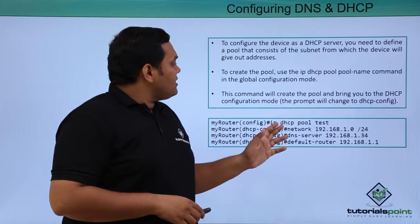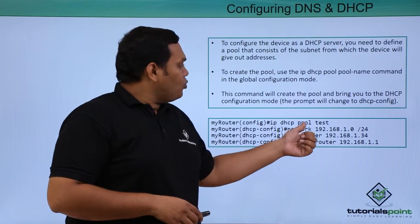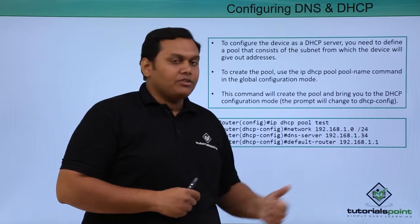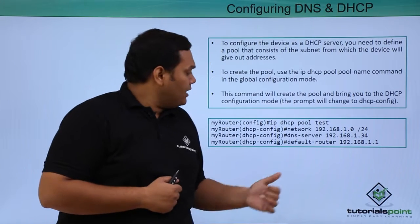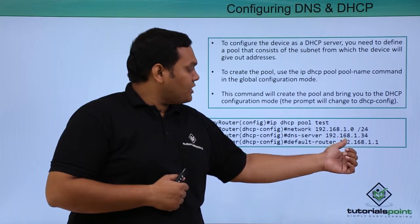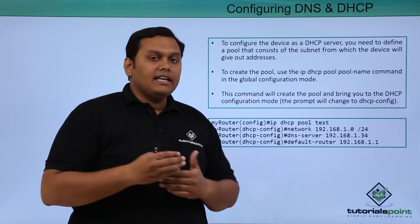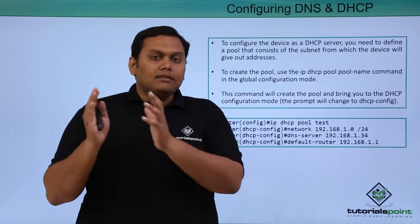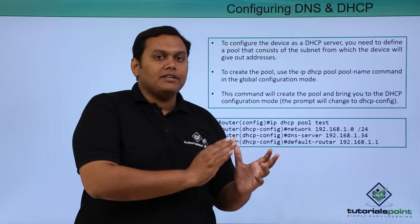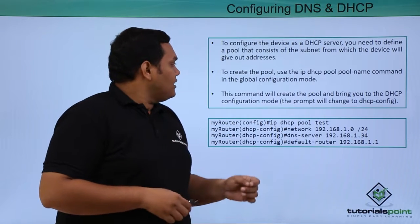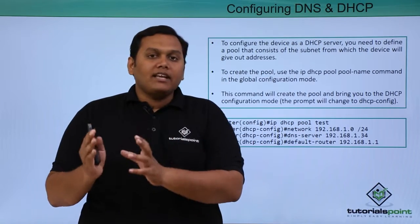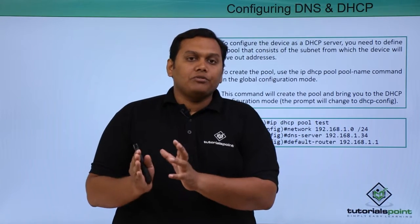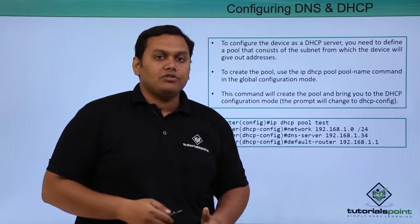The basic configuration uses the command: ip dhcp pool test. We enter the pool name, specify the network with slash notation, assign the DNS server as 192.168.1.34, and set the default router as 1.1. This command creates a pool and enters DHCP server configuration mode, enabling automatic assignment of IP addresses to interfaces.